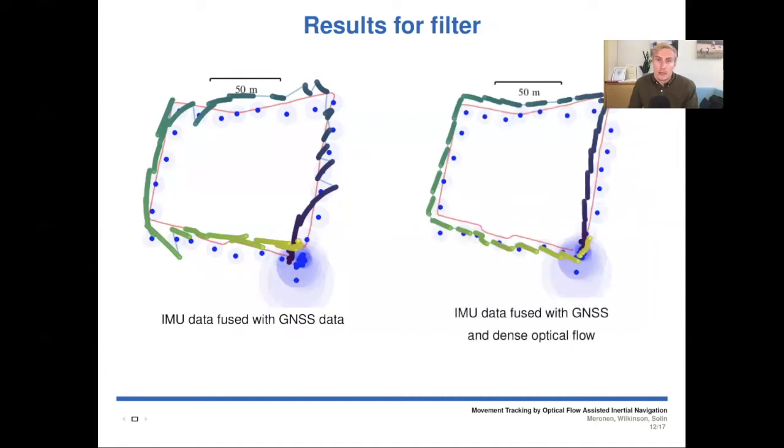Here on the right, we have additional to the previous data, also the dense optical flow used. And we can see that the jumps each time a GNSS measurement is observed are much smaller and the drift is much less when dense optical flow is used.